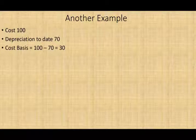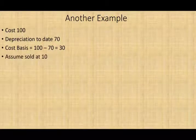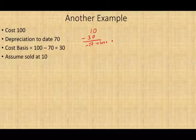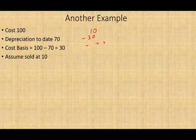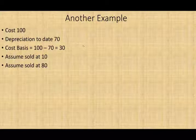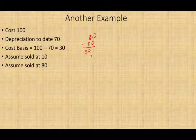Let's work another more detailed example. We bought an asset with a cost of $100. Depreciation to date is $70, so the adjusted basis is $30. First, assume we sold the asset for $10. Consideration received is $10 minus basis of $30, giving us a loss of $20. This is a Section 1231 loss — ordinary loss, nothing to worry about.